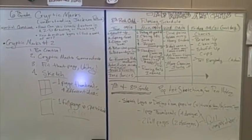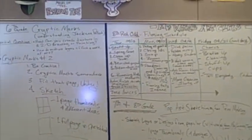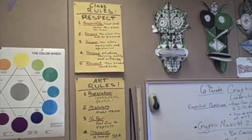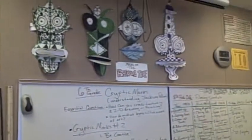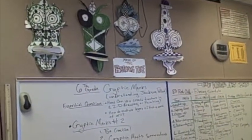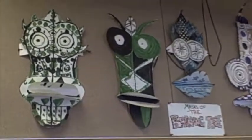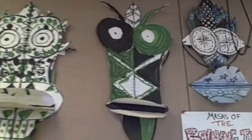Here is the informational board — pretty much day-to-day activities go on this board. The kids know to look at it, and it's sectioned off for sixth, seventh, and eighth grade. To the left I have my art class rules and some different artwork all over the walls.